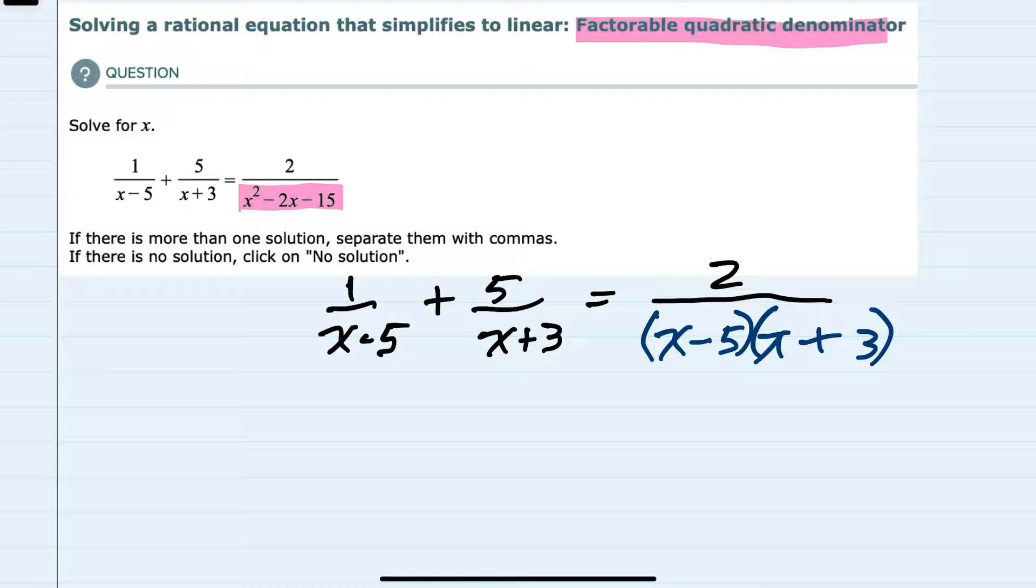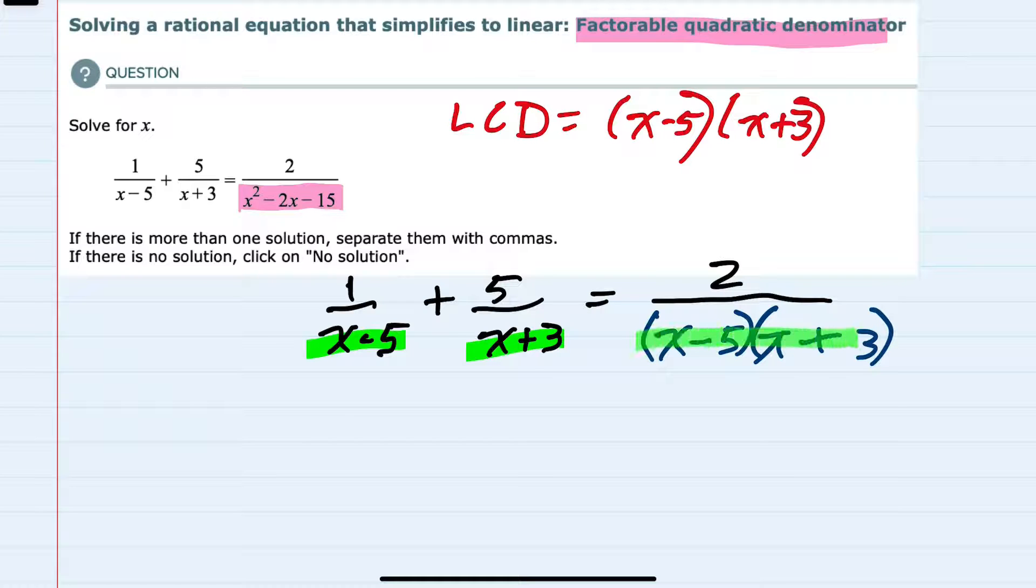And now that we have all of our denominators factored, I can identify the lowest common denominator, which would have to have an x minus 5, just as the first term does. It would also need to have an x plus 3, because the second fraction has an x plus 3. And then it would also have to have an x minus 5 and an x plus 3 represented in the lowest common denominator. So our lowest common denominator is x minus 5, x plus 3.